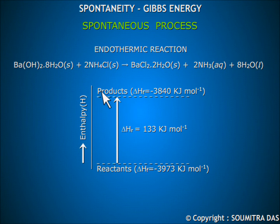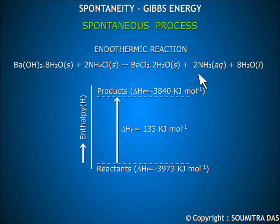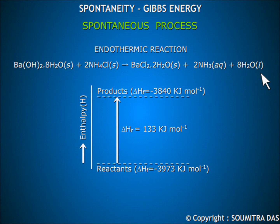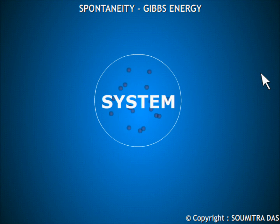For example, the reaction between two solids — barium hydroxide and ammonium chloride — is spontaneous as well as endothermic. It is seen that the randomness or chaotic nature of the products is more than that of the reactants because there are liquid products. We all know that liquid molecules are more mobile than solid molecules, and therefore the random nature of the products is greater.